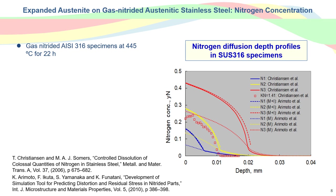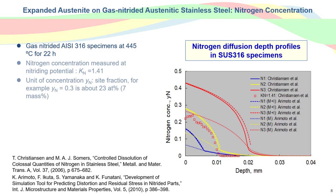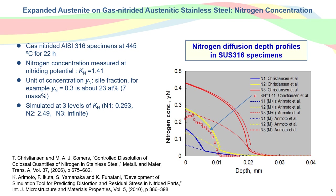Christiansen and Sumo gas-nitrided small specimens of austenitic stainless steel at 445 degrees Celsius for 22 hours and confirmed that the expanded austenite was formed near the surface. The profile of the nitrogen sublattice concentration was obtained experimentally at 1.41 of nitriding potential, shown by the square markers. The simulation shows nitrogen diffusion at three stages of potential, as shown in the solid lines.